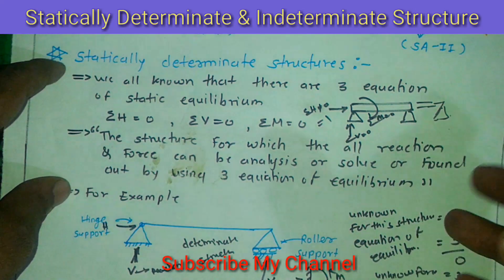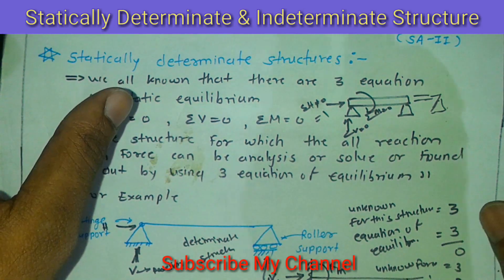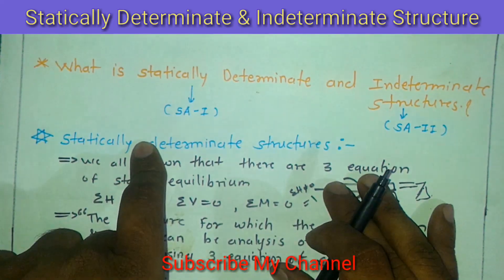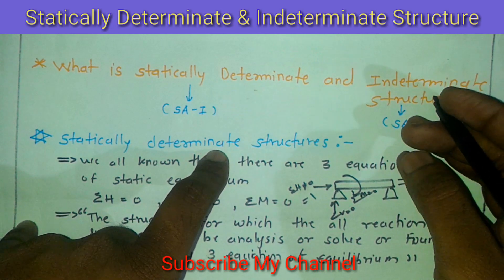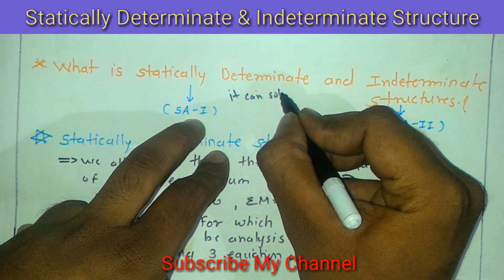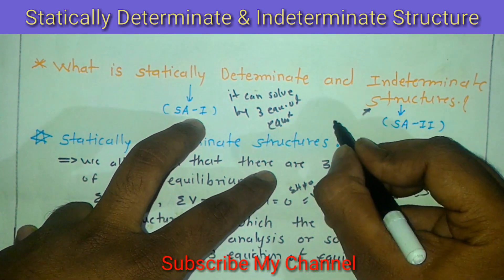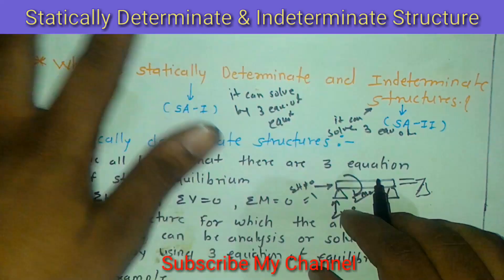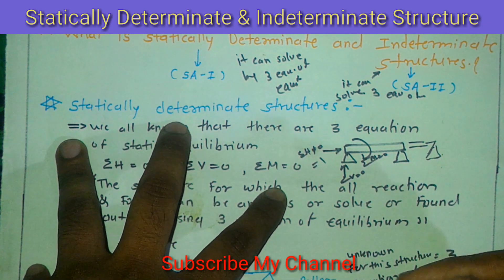To simply summarize: if the forces or reactions in a structure can be solved by using three equations of equilibrium, that is a statically determinate structure. If it cannot be solved by using three equations of equilibrium, that is a statically indeterminate structure. This is the simple difference between statically determinate and indeterminate structures. If you like this video, please subscribe to my channel and share it with your friends. Thank you.